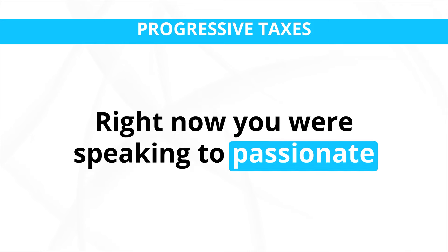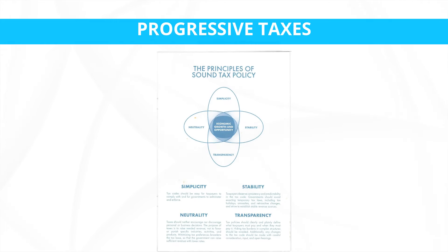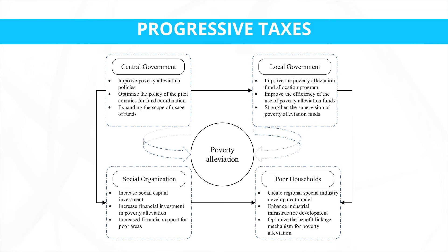For passionate students who want to solve problems like these, three key skills to study are: first, tax policy and economics, to understand the principles of progressive taxation, its impact on different income groups, and its potential role in poverty reduction; second, public policy and advocacy, to influence policymakers and build support for progressive tax reform; and third, social welfare and poverty alleviation, to understand the complexities of poverty and design effective poverty reduction programs that can be funded by progressive tax revenue.